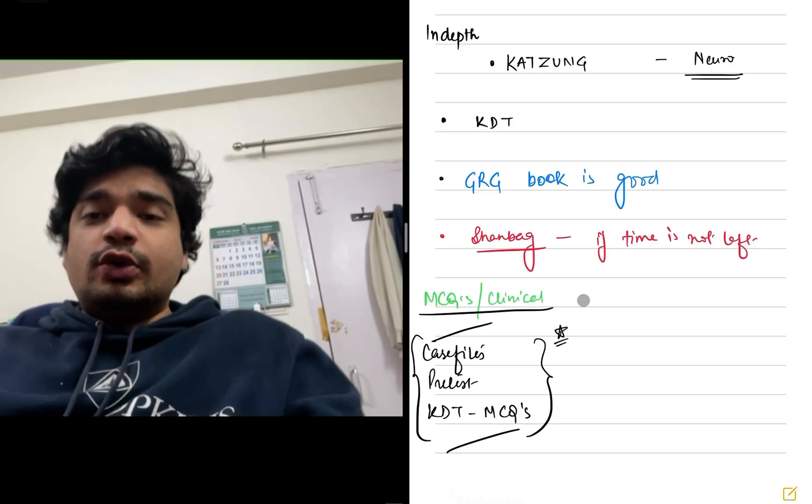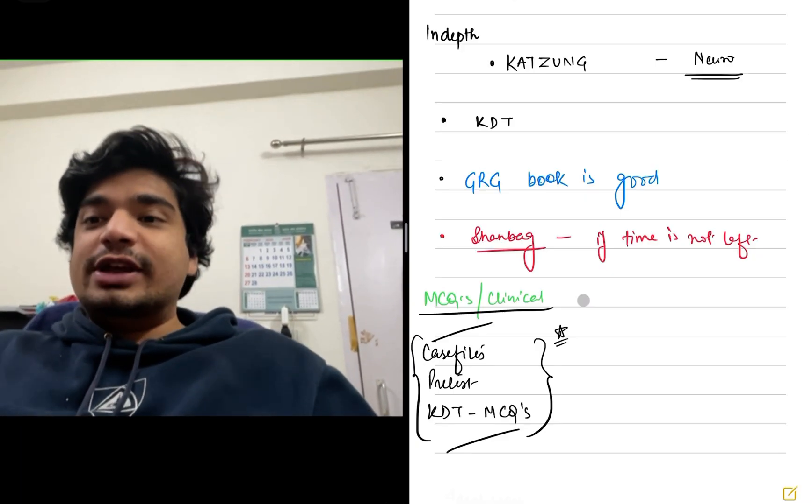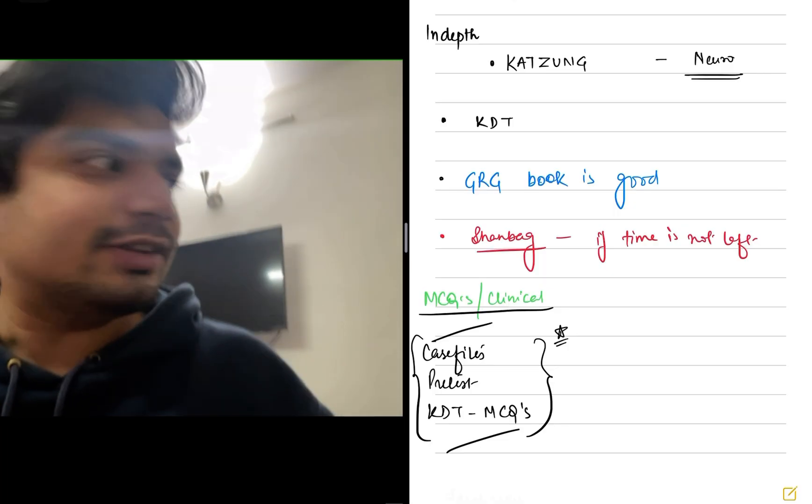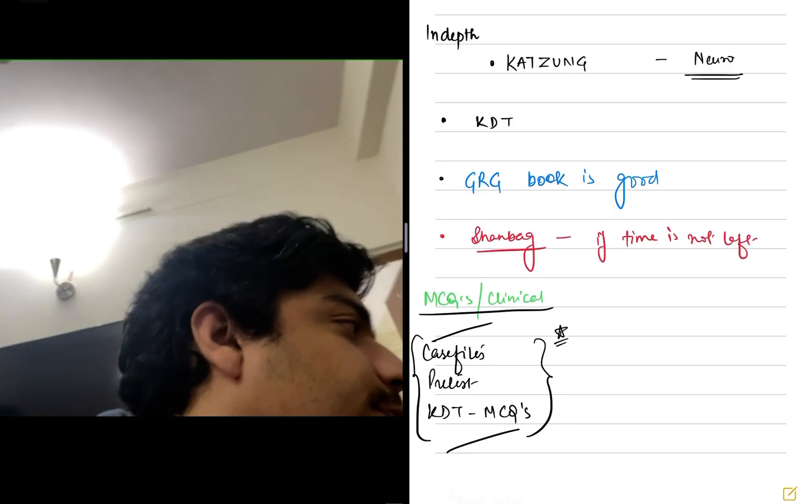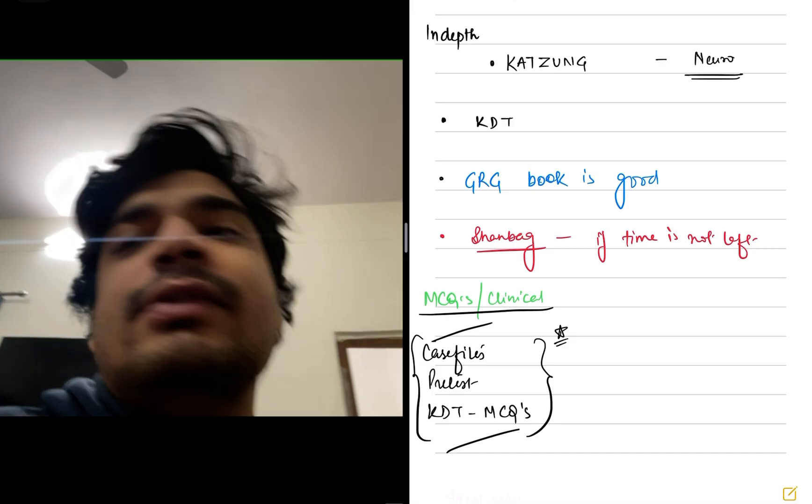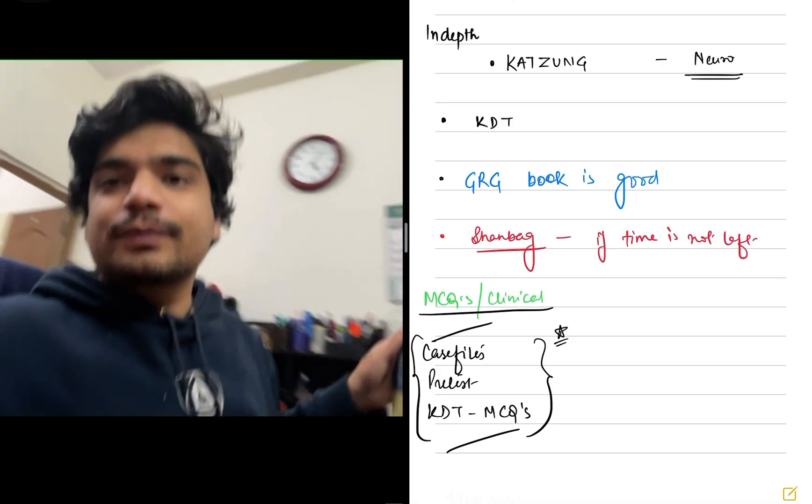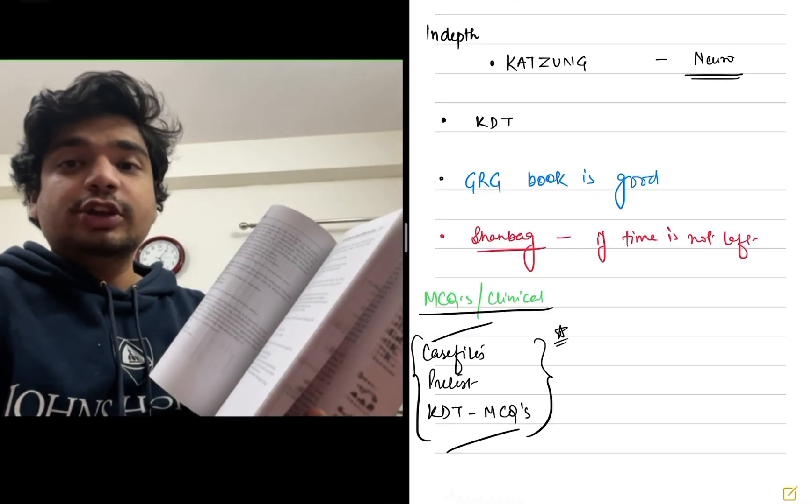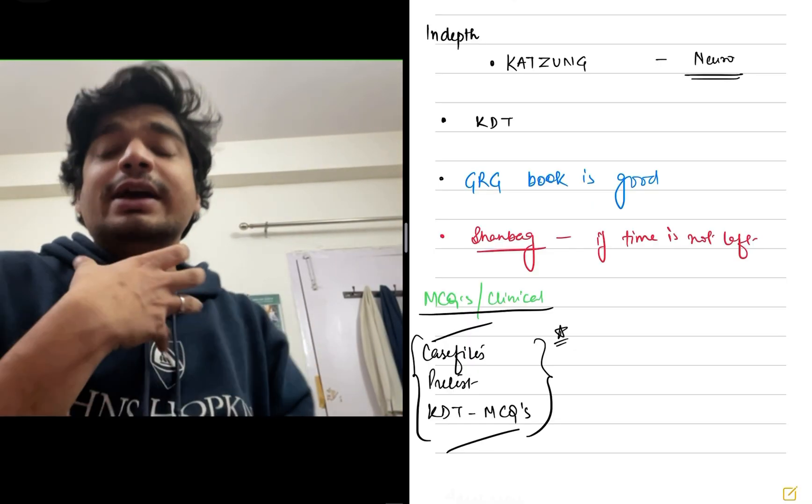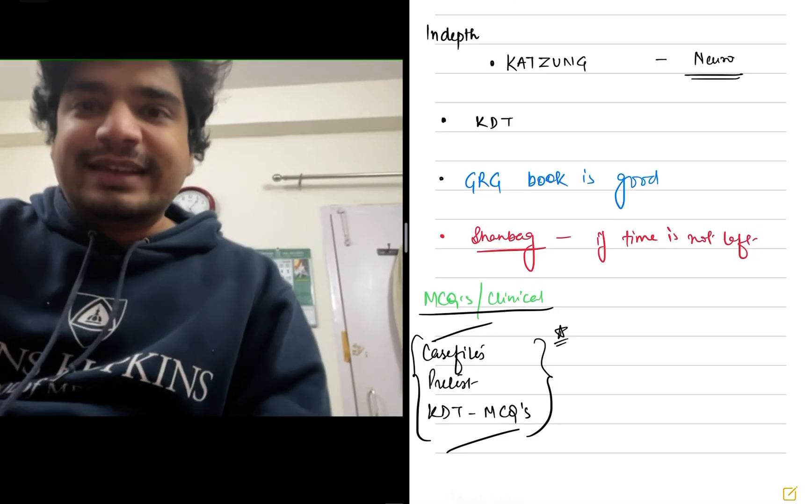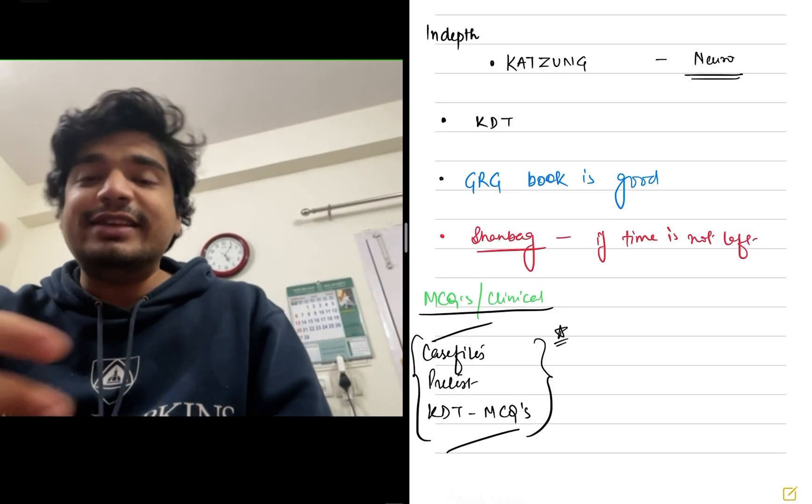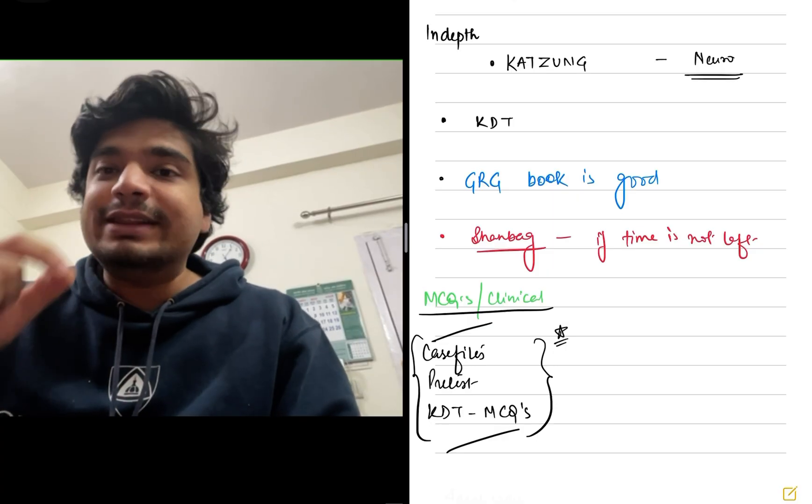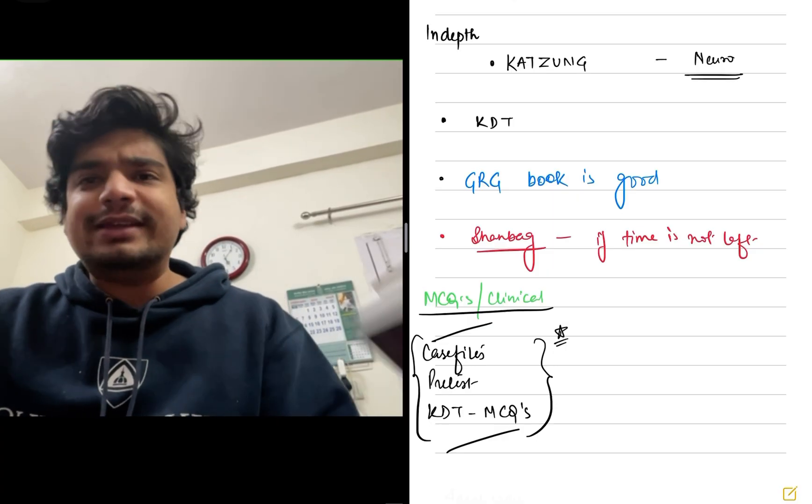And if you want to focus on the clinical scenarios and the MCQs, I'll say case files and pretest. I've always highlighted these books as far as any other subject is concerned. So I'll just show you the pretest of pharmacology that I have. So this is the pharmacology pretest that I have. Basically, what it does is that it has a lot of MCQs which are USMLE based, which are clinical based. So in your NEXT examination, they are already saying that 10% of the question will be from pre and paraclinical subjects and they will be clinically oriented.